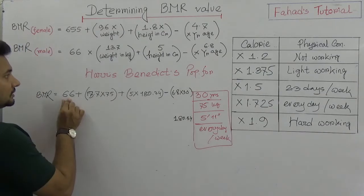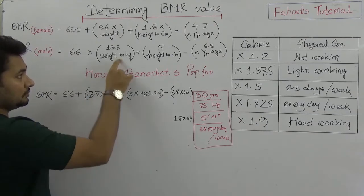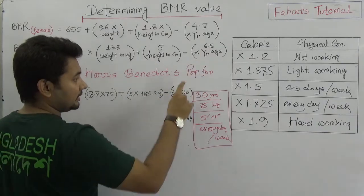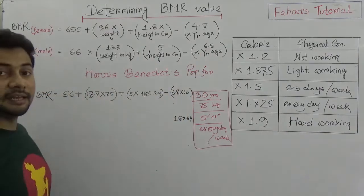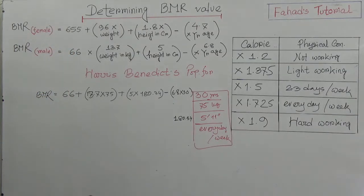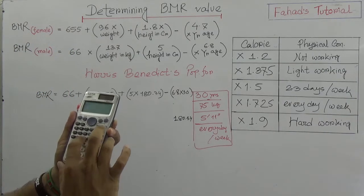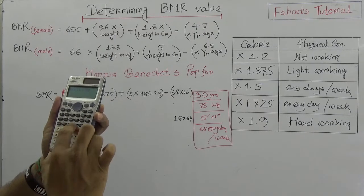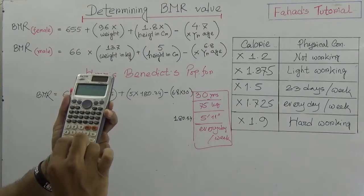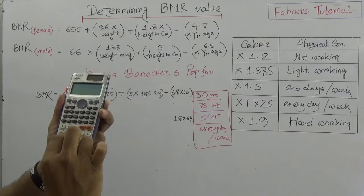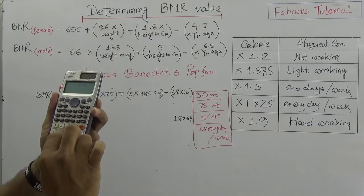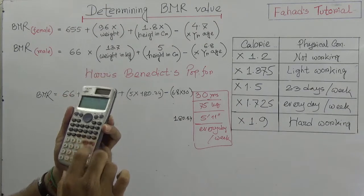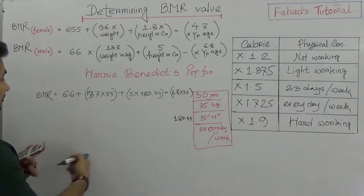Calculating: 66 plus 13.7 times 75, plus 5 times 180.34, minus 6.8 times 30. The result is approximately 1791 calories. That is the BMR of this person.